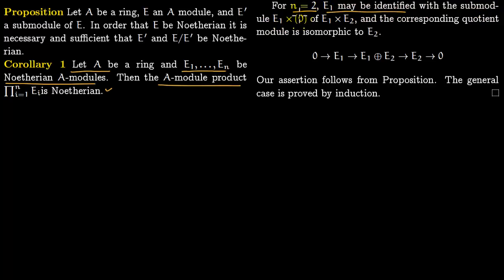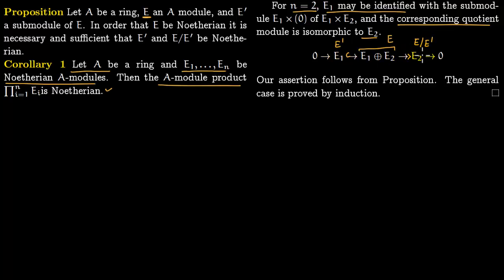For n equals 2: E1 may be identified with the submodule E1 times 0 of E1 times E2, and the corresponding quotient is isomorphic to E2. We set up the exact sequence 0 → E1 → E1 ⊕ E2 → E2 → 0, identifying E as E1 ⊕ E2 and E prime as E1. The general case follows by induction: E is Noetherian if and only if E prime and E over E prime are Noetherian, i.e., E1 and E2 are Noetherian, by the proposition.